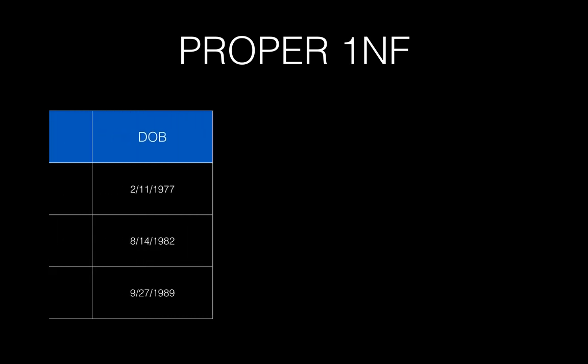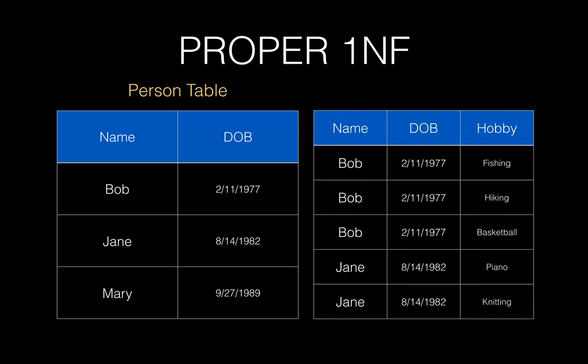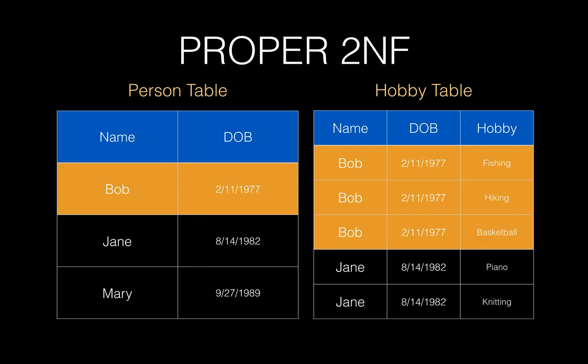Let's see how we can comply with the first normal form in order to comply with the second normal form as well. Proper first normal form requires us to split up this data across two tables: namely, a person table, which describes the person's name and date of birth, and a hobby table, which describes the hobby that corresponds to our person. In this case, we're complying with the first normal form. Consequently, we're also complying with the second normal form because the hobby, which is the non-prime attribute of our table, depends entirely on the primary key or prime attribute of our table, namely Bob and his date of birth.